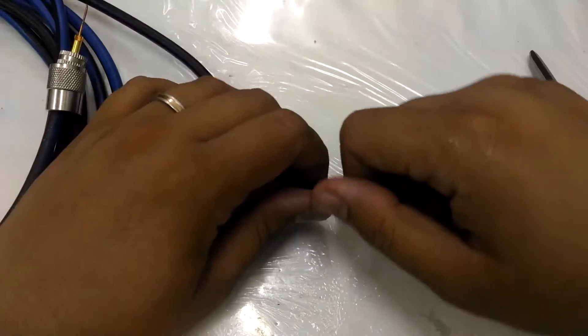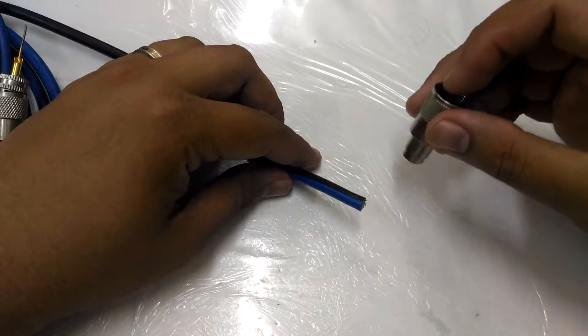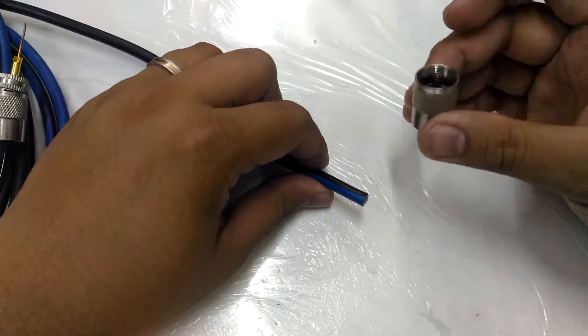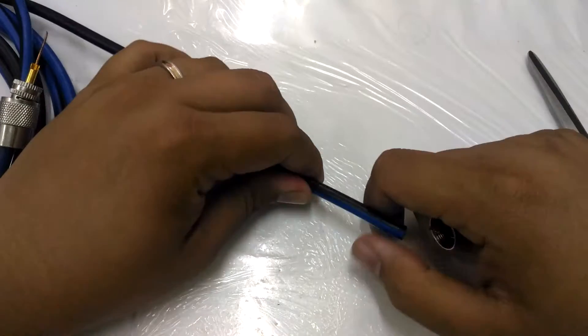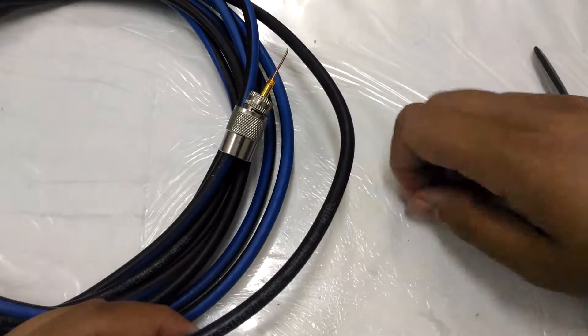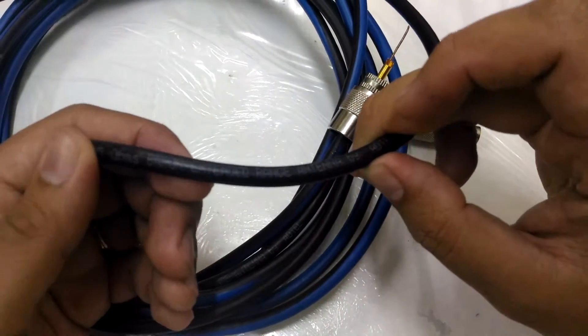Hello everyone, Zulu Charlie Fox here again. This is a hopefully brief tutorial on how to connect your PL259 to your coaxial cable for your ham radio. Actually, this is just going to be a demonstration because I'm using the wrong kind of cable.